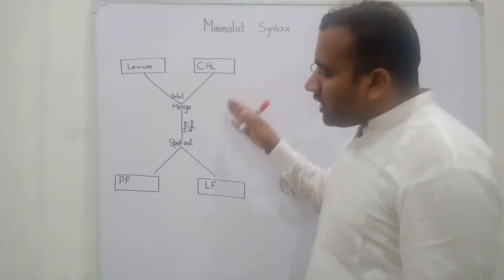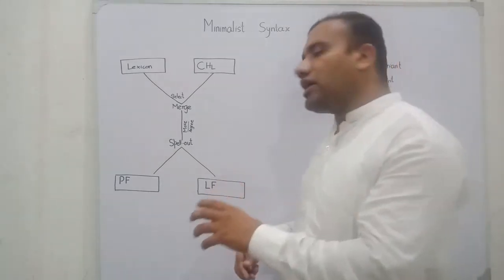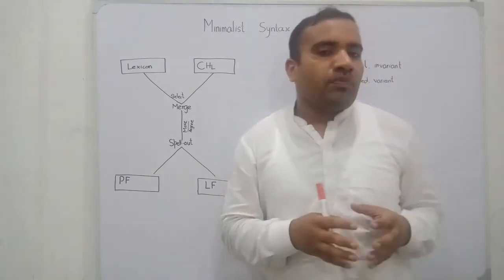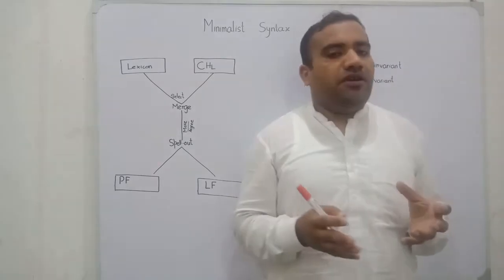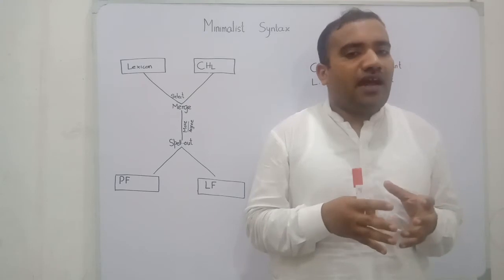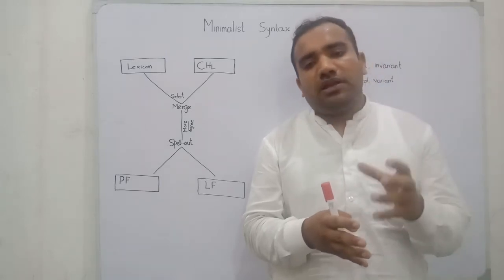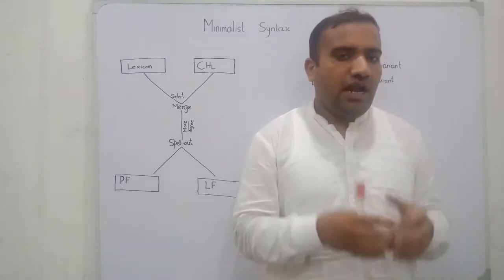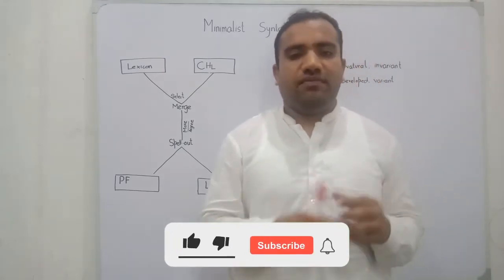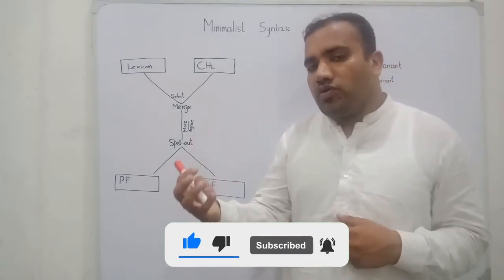You are seeing the diagram. On the diagram we don't have any sub-modules like the government theory, the X-bar theory, the binding theory, or the theta theory. We don't have any theories, because Chomsky has simplified the human faculty of language. He states that all these theories are burdening the faculty of human language. Human faculty of language is totally unconstrained and unrestricted, so Chomsky has eliminated all the sub-modules from the faculty of human language.